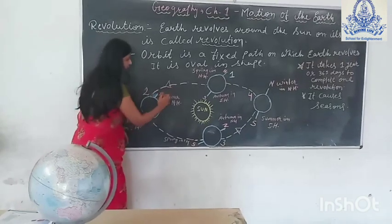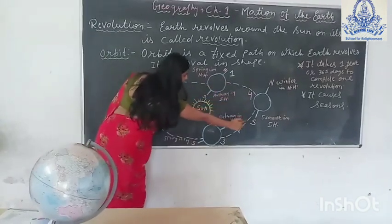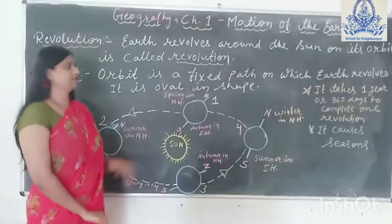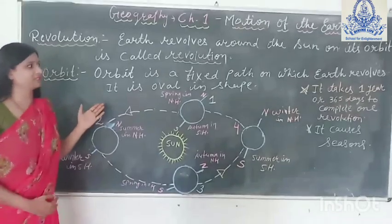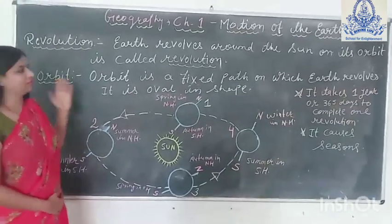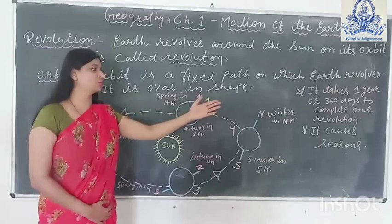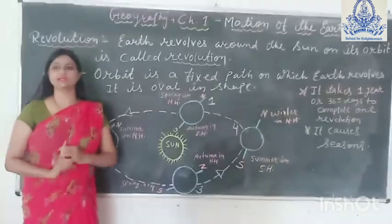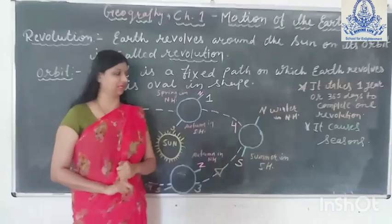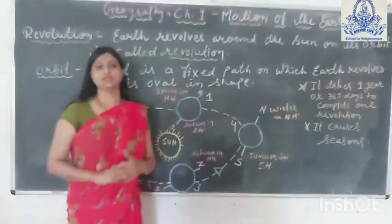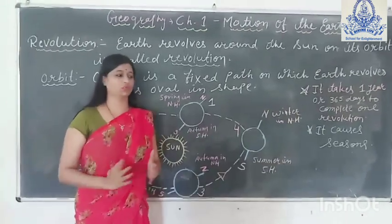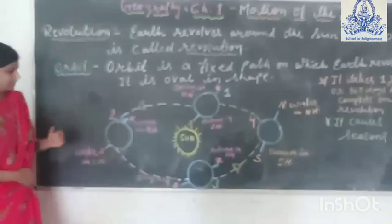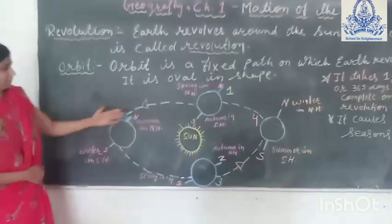You can see the orbit in this picture — it is the dotted line shown in the diagram. The earth takes one year, or 365 days, to complete one revolution. This revolution causes the change of seasons. With the help of this diagram, we can understand the revolution. In this diagram, you can see four positions.